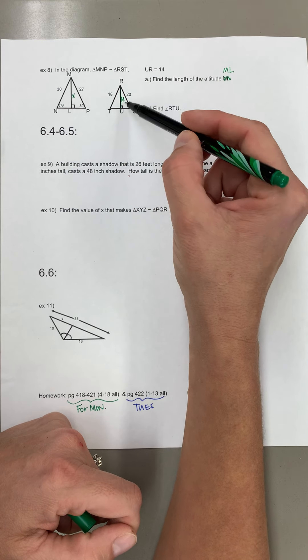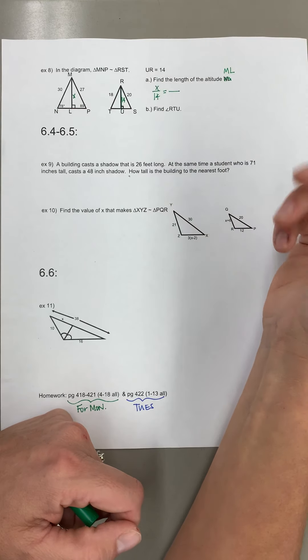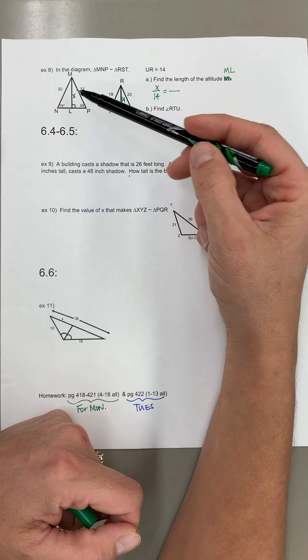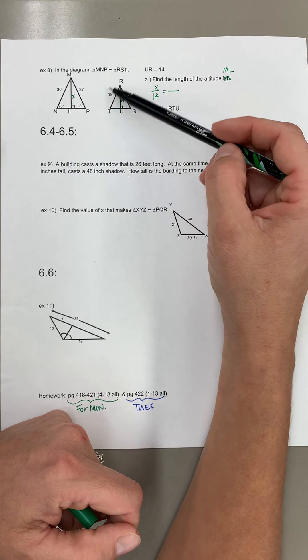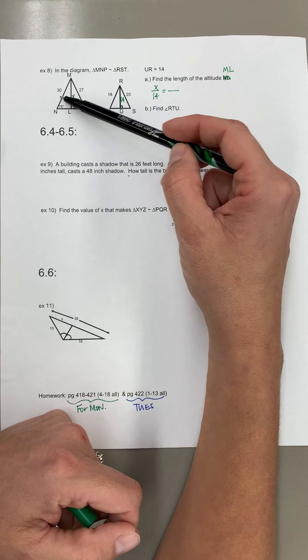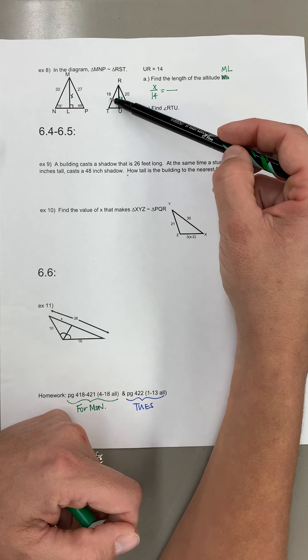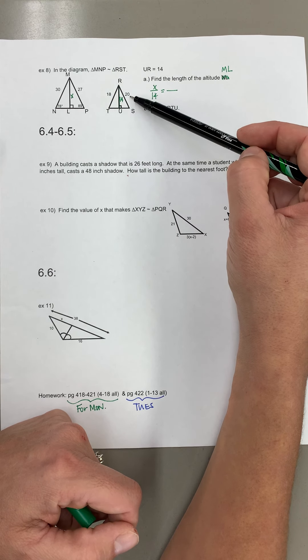So X would go with 14 and then I have to pick two sides that go together so just be careful about this. So I'm thinking that 30 automatically goes with 18 because it's in like the same spot. Hopefully you realize 30 is bigger than 27 and 20 is bigger than 18, so that means actually 30 goes with 20.